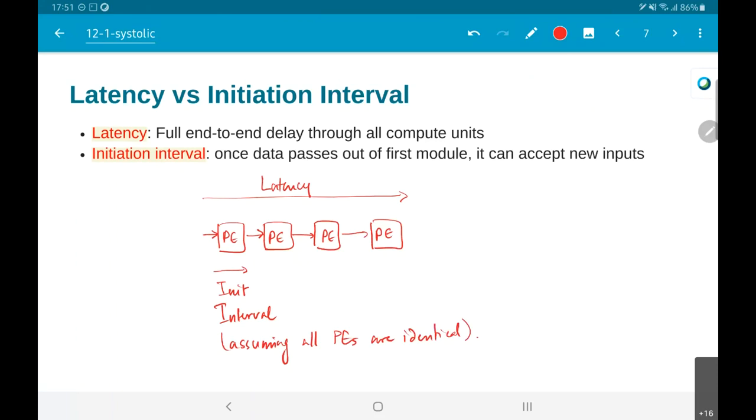Assuming that all PEs are identical or uniform, that the delay through one is basically equivalent to the delay through the others. As soon as the data passes out of the first module, it can accept new inputs. A new iteration is initiated. While the second processing element is working on the first data, the first processing element is working on the second data and so on. That is the idea. Both of these concepts are the same as what we generally think about.